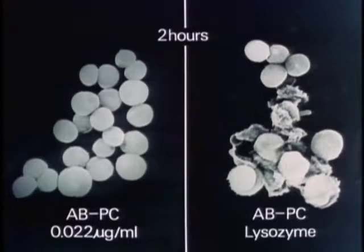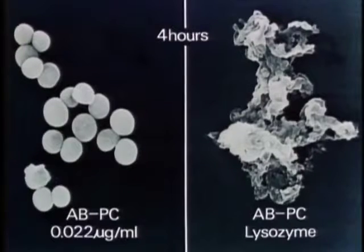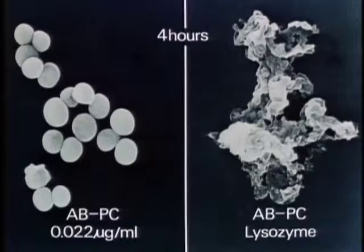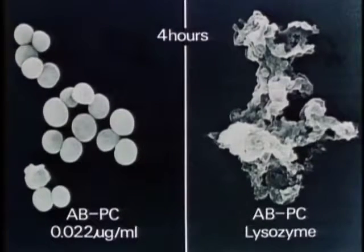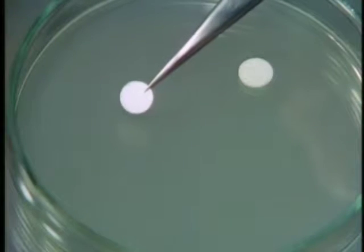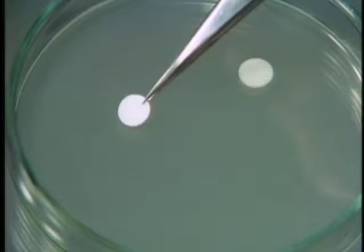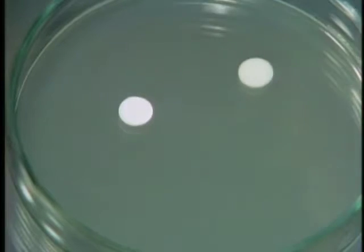リゾチームを単独で作用させた場合、ほとんど形態変化は見られません。アンピシリン単独とアンピシリン・リゾチームを混ぜた場合の比較、2時間目の状態です。4時間目では、左側のアンピシリン単独に比べてリゾチームを加えた右側の画面はほとんど溶菌しています。グラム陽性の黄色ブドウ球菌の場合、その強力効果は特に著明に現れます。